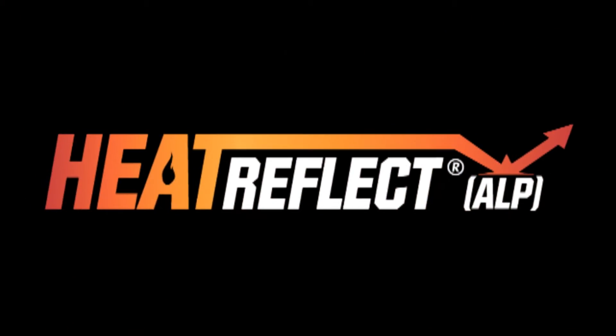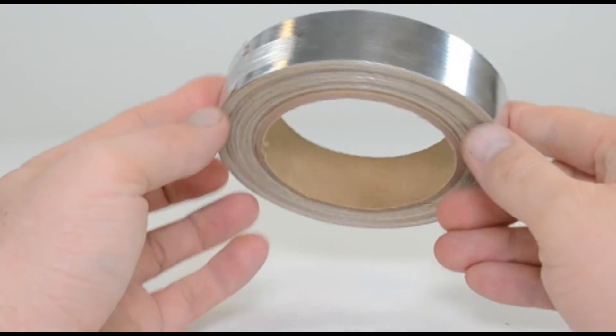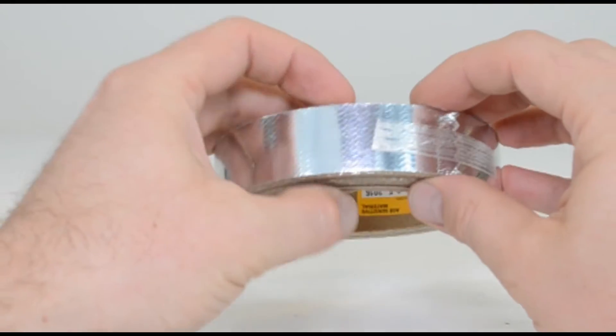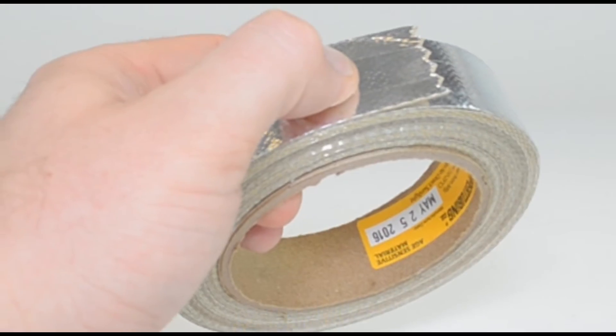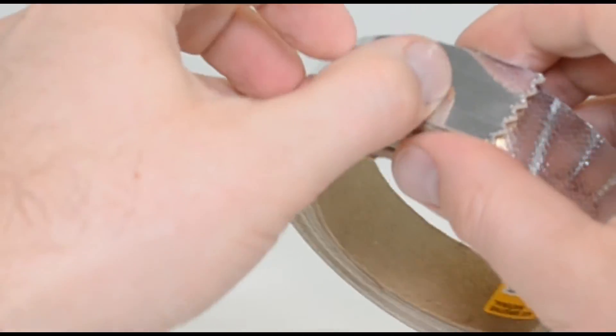Heat Reflect ALP is a medium weight fiberglass reinforced high temperature tape that is coated with polyurethane and features an aluminum foil surface on one side.